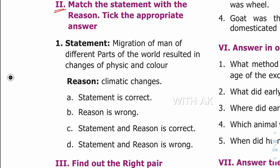Second exercise: match the statement with the reason. Tick the appropriate answer. First question — statement: migration of man to different parts of the world resulted in changes of physique and color. Reason: climate changes. Option C: statement and reason is correct. Humans evolved in different directions, and climate change affected physical appearance and color. That is why people differ across continents and countries. So option C is the answer.